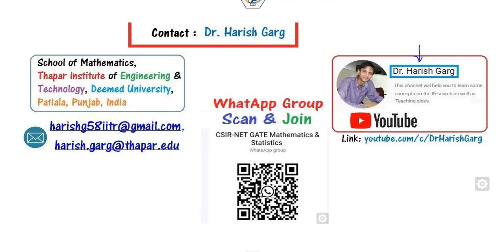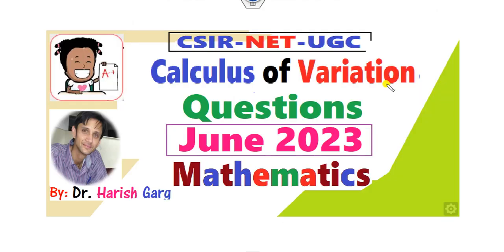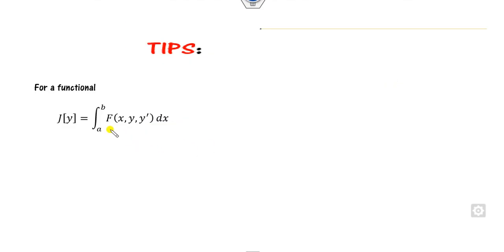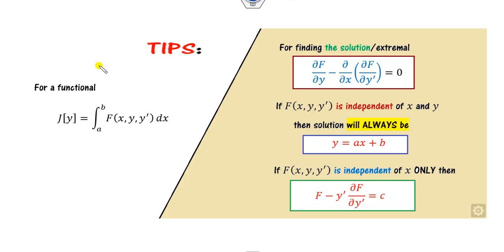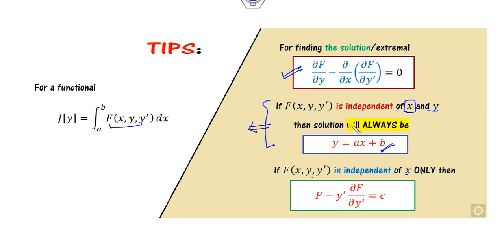So let us start with this video. Since it is a part of calculus of variation, whenever you have a function from A to B, the solution is given by the Euler-Lagrange equation. If the function is independent of X and Y, the solution is always of that form. When the function is independent of X only, you can write it in a specific form. Remember this second tip — it is very useful, and one question this year is also based on it.